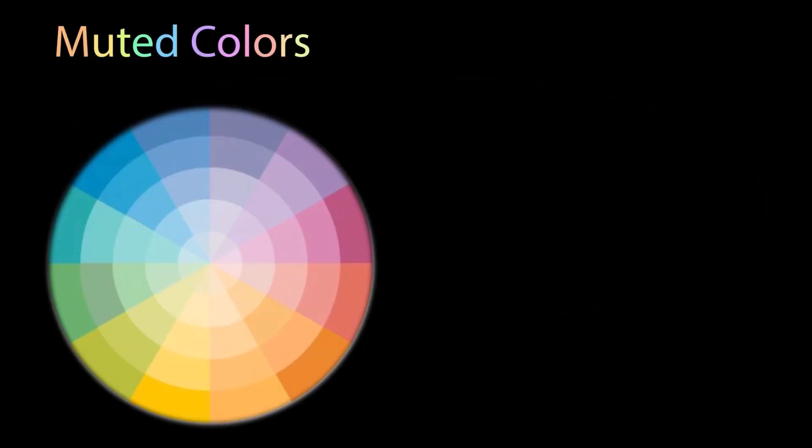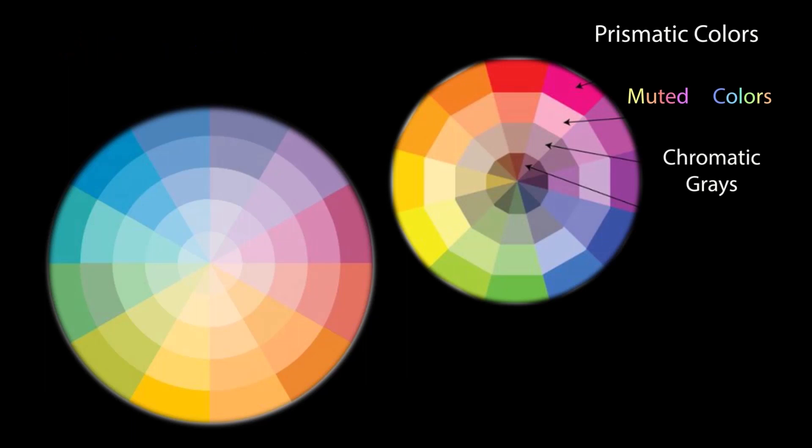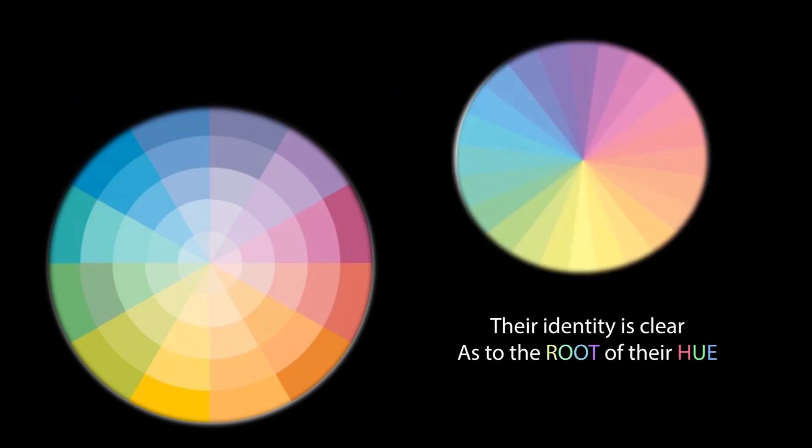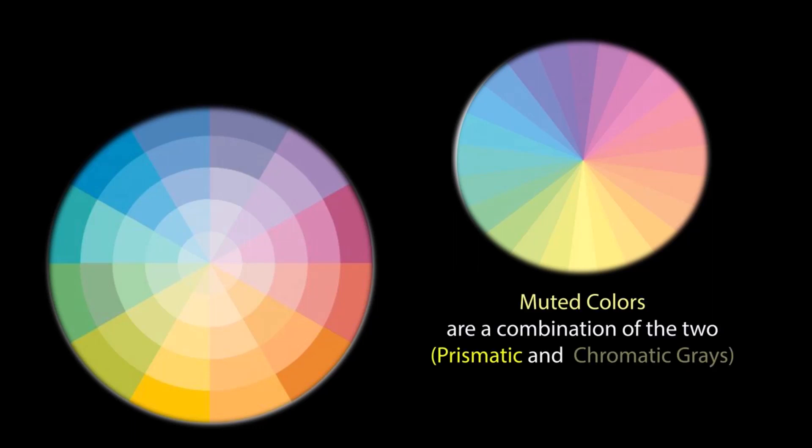Muted colors. Muted colors are in between prismatic colors and chromatic grays. They are softer than prism but still have an identifiable display. Their identity is clear as to the root of their hue. Muted colors are a combination of the two.